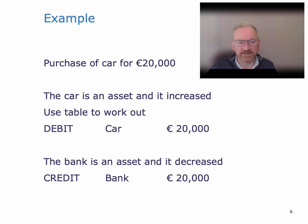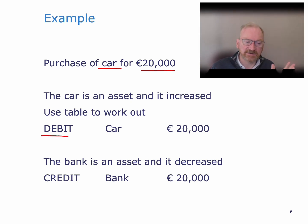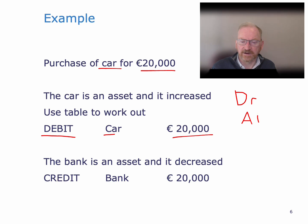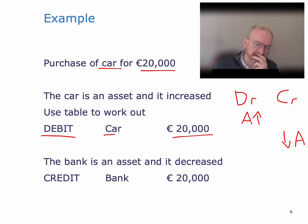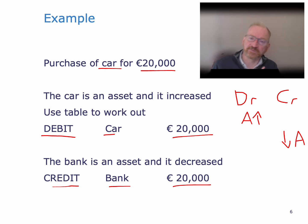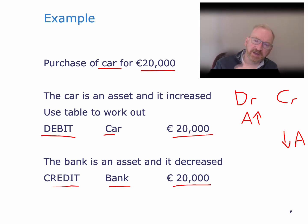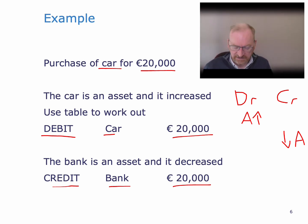Let's see an example of how this works. We go back to our purchase of the car for £20,000. This is an asset and it has increased, so we debit the car asset with £20,000 — debit is an increase in an asset. The other side of the transaction is to credit bank £20,000, because credit is a decrease in an asset. We now have what we call a journal entry: we have a debit, we have a credit, and they're equal to each other. This means, by definition, that we are keeping the accounting equation in balance.